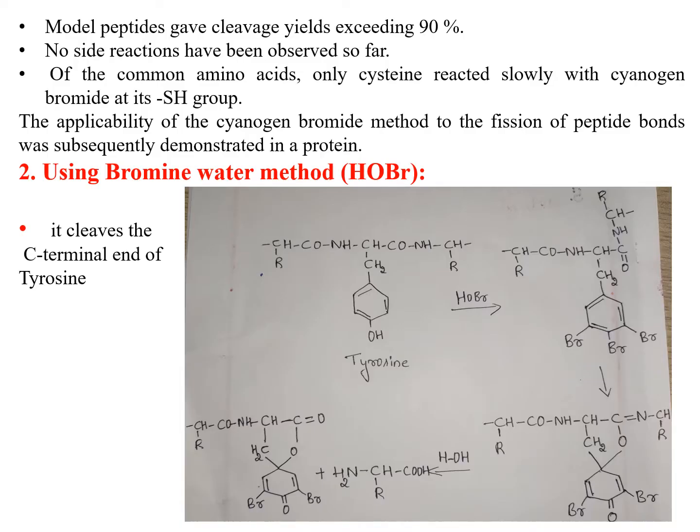Model peptides gave a cleavage yield exceeding 90 percent and no side reactions were observed. Among the common amino acids, only cysteine reacted slowly with cyanogen bromide at its SH group. The applicability of the cyanogen bromide method to the cleavage of peptide bonds was subsequently demonstrated in proteins.